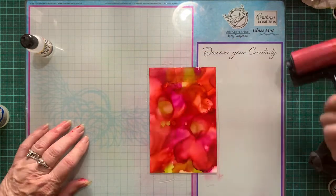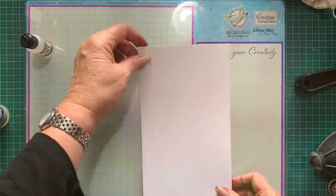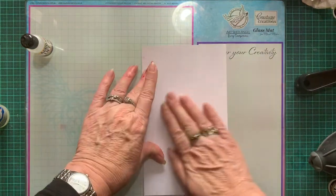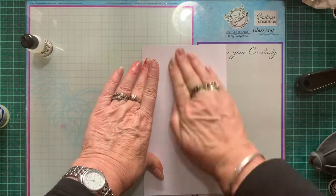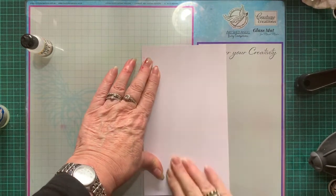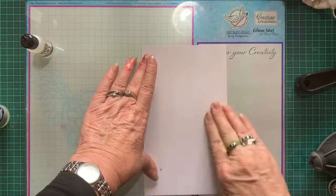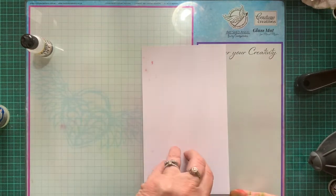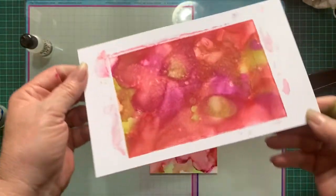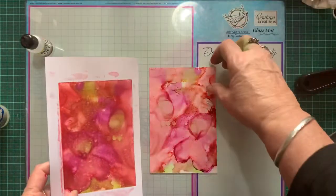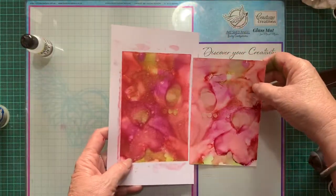Then put a piece of cardstock over the top and give it a rub. This is just normal 300 GSM cardstock. Then you peel it off the yupo paper and you're left with a print of that.